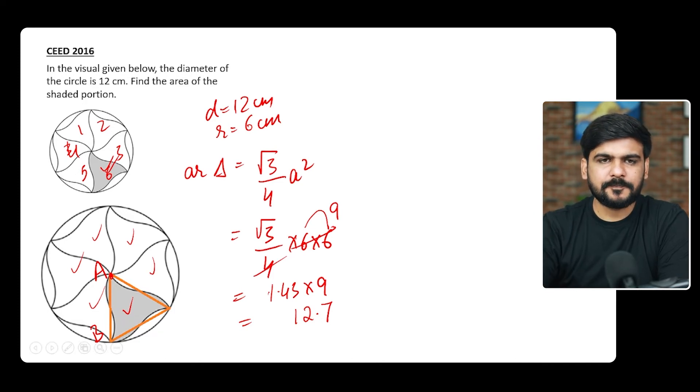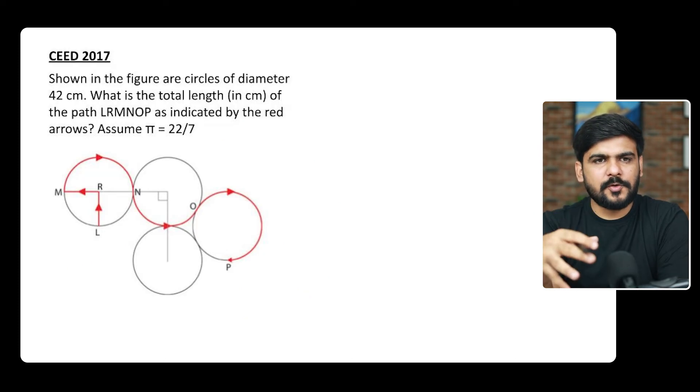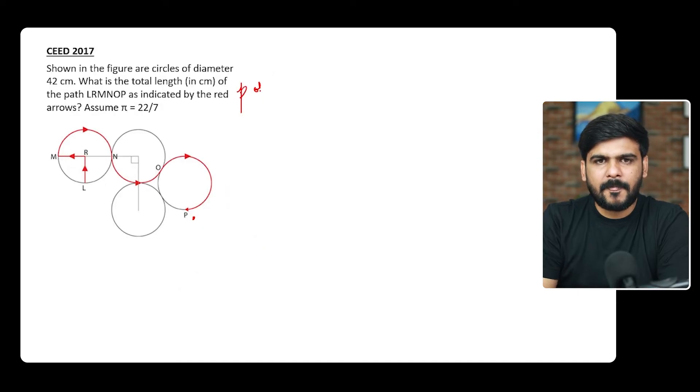Let us move to the next question. In this question, they want us to find out this length, which is this red line starting from L up to this point P. So this whole path we have to find, and we can see that this whole path can be traced through the perimeter of the circle. And what is the perimeter of the circle? It is 2πr.